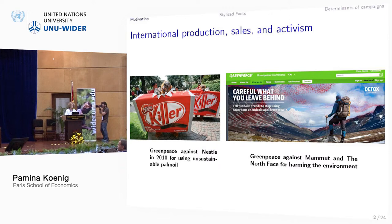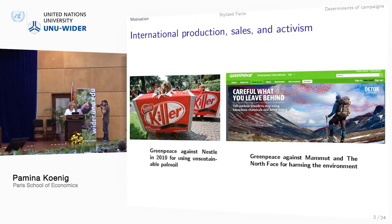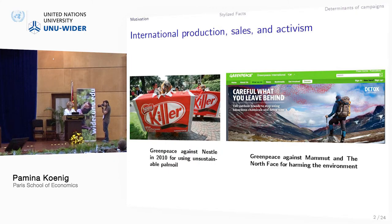These are both campaigns by NGOs that focus on international production and/or sales. The one on the left is a campaign by Greenpeace focusing on the production of the input used to produce the chocolate bar, and the problem here is the way that this input is produced and the fact that it is contained in the final product. The one on the right is also a campaign by Greenpeace — and we can find similar ones by other NGOs — and this one is concerned with the sales of two firms, the Mamut and the North Face.